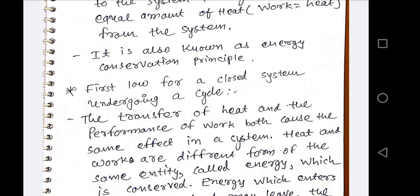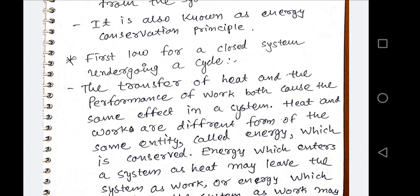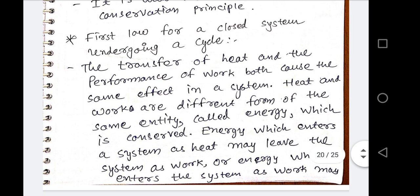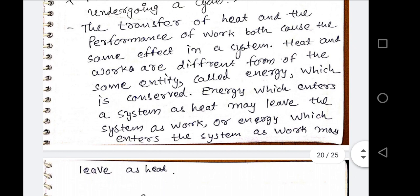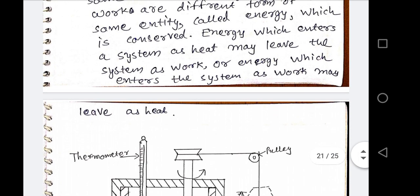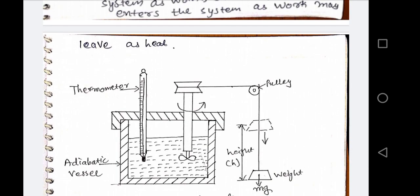Heat and work are mutually convertible, so the transfer of heat and the performance of work both cause the same effect in the system. Heat and work are different forms of the same entity called energy, which is conserved. Energy which enters a system as heat may leave as work, and vice versa. To demonstrate this, Joule developed a setup — which is why this is also known as Joule's experiment.